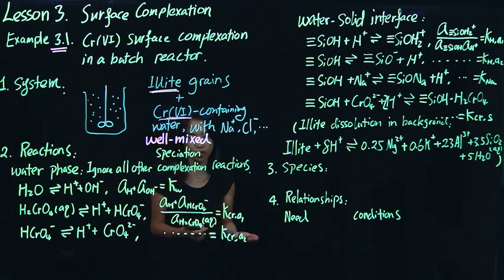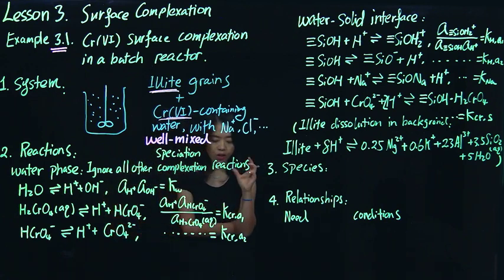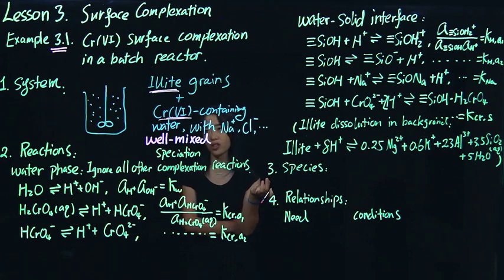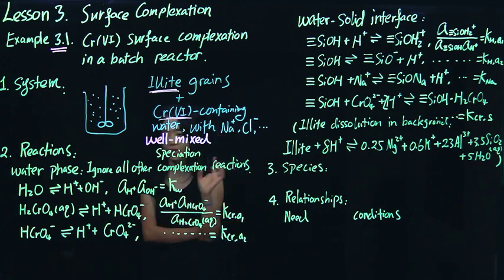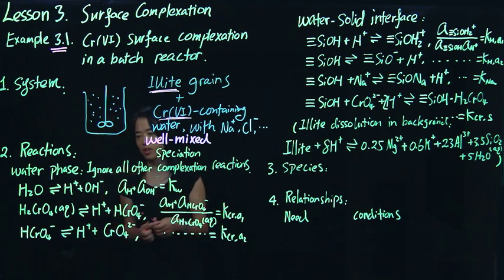So there are some other species, for example magnesium and silica — we'll talk about that later. In order to set up the software system, surface complexation is usually considered as very fast reactions, similar to aqueous complexation. So we usually think about the thermodynamics of these reactions instead of kinetics.